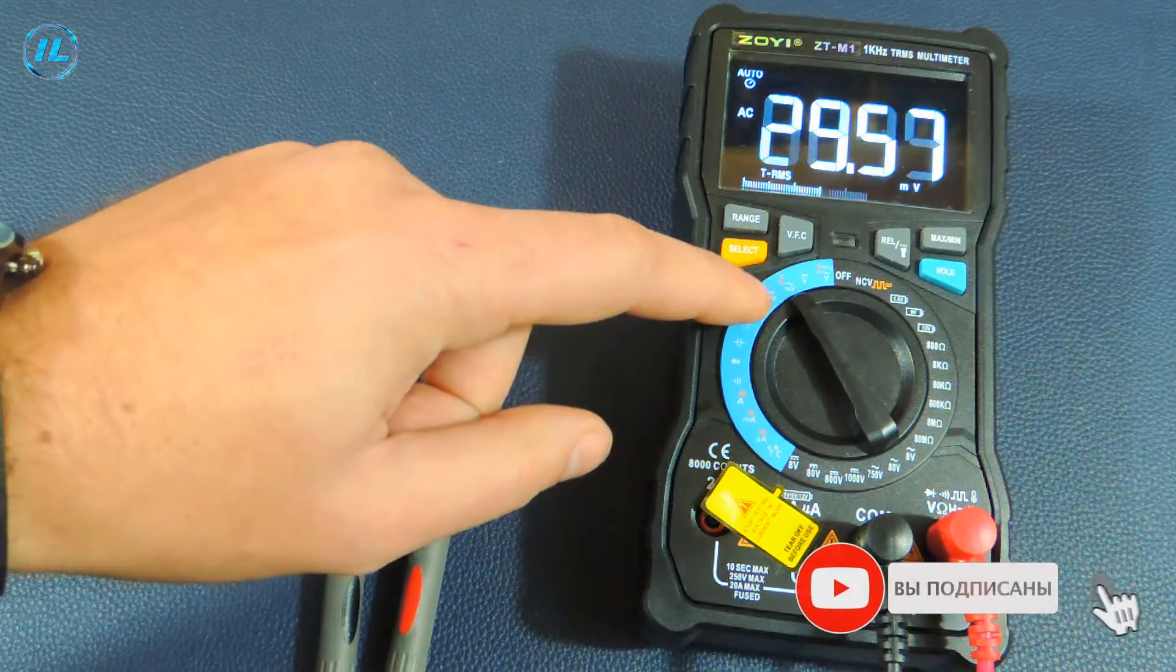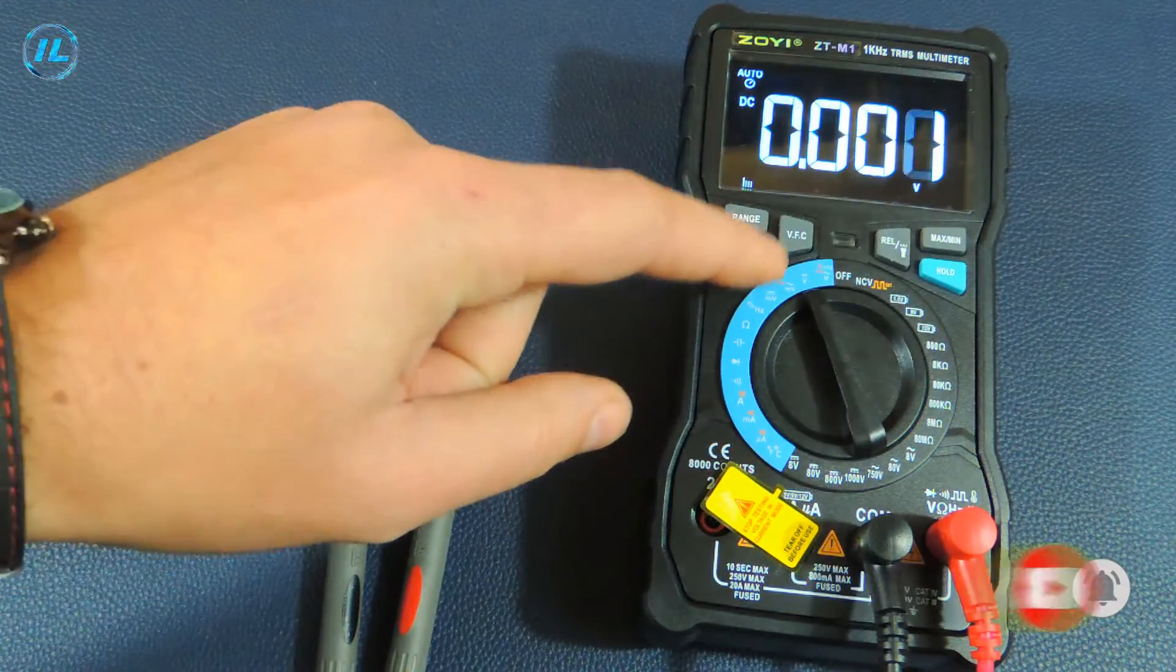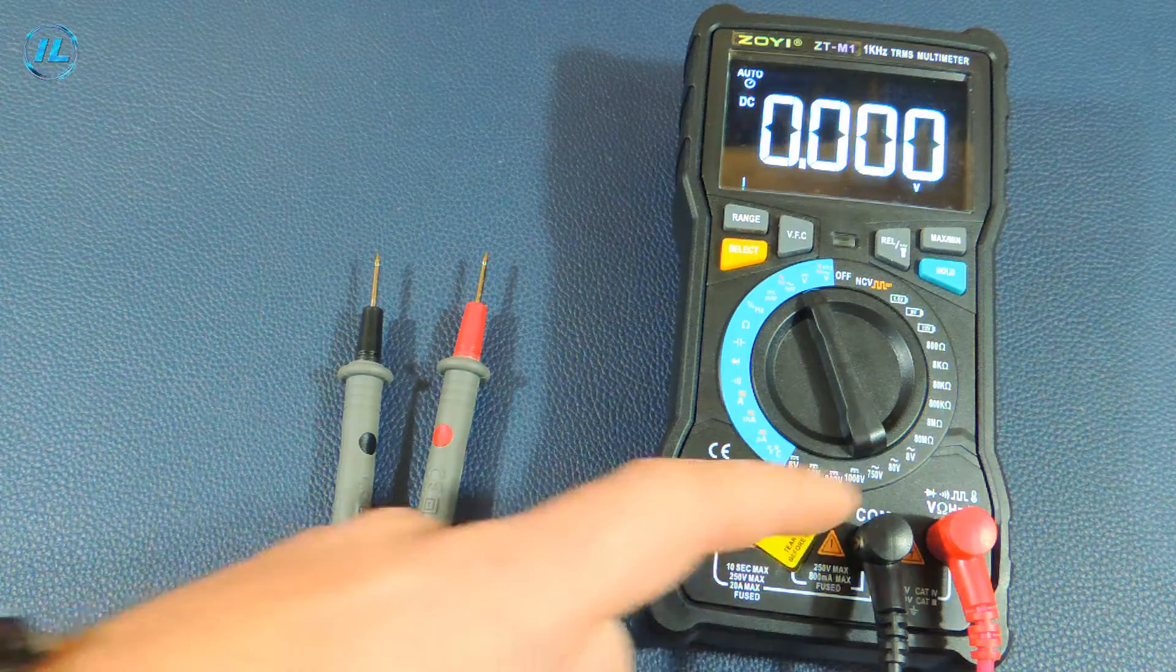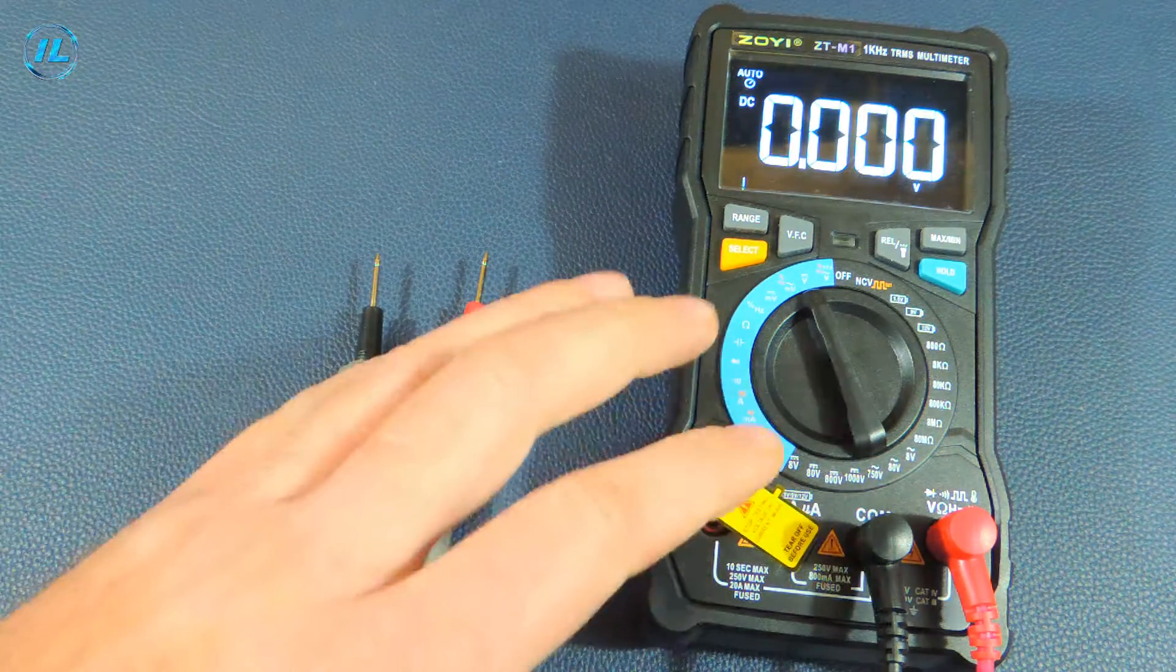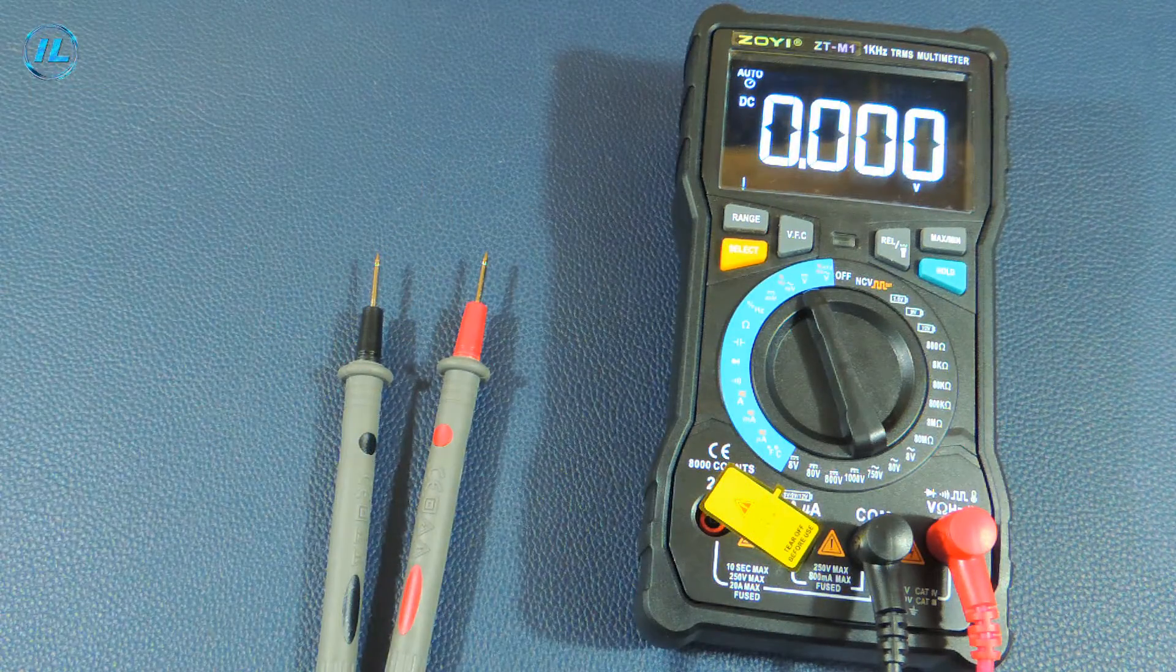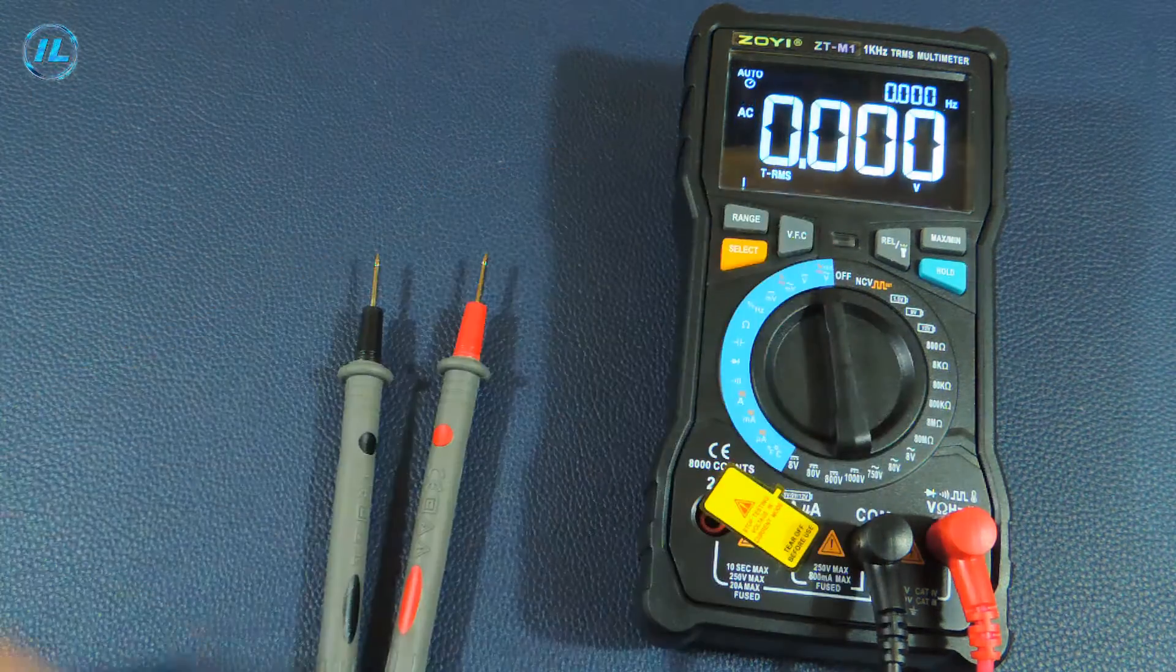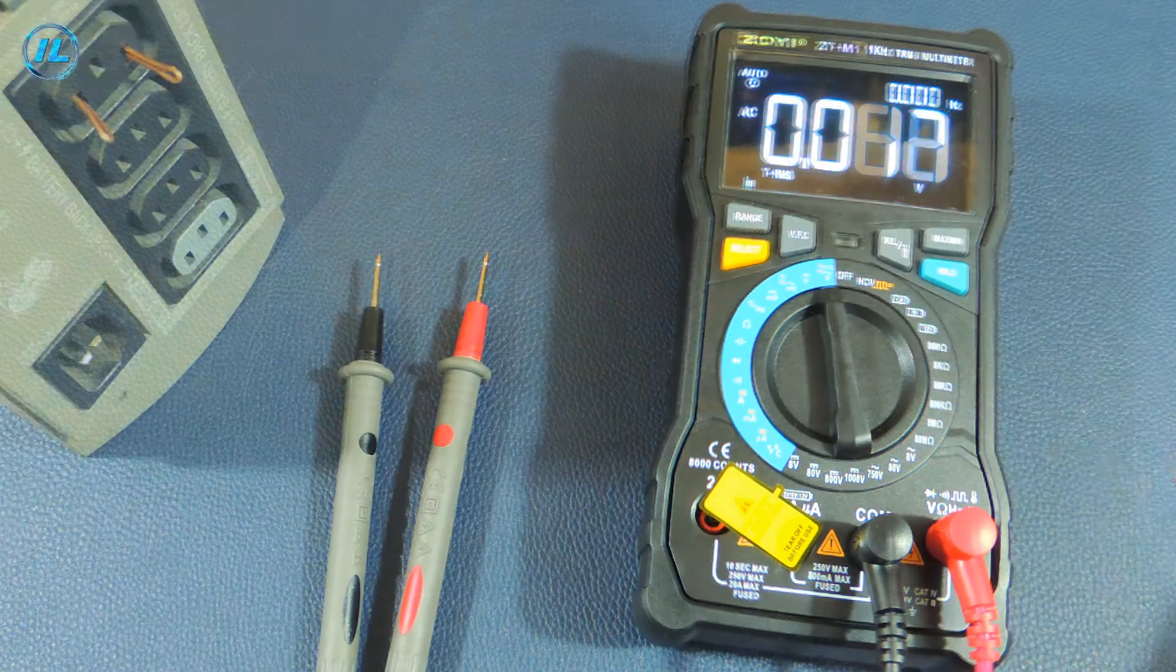The next position is the measurement of a small alternating voltage. Then the measurement of the constant voltage. A little earlier, when manually selecting the measuring range, we could already make sure that this ZTM-1 multimeter accurately and quickly measures voltage. The next item is the measurement of alternating voltage, frequency and also the VFC function.